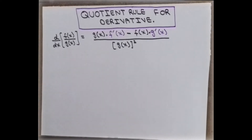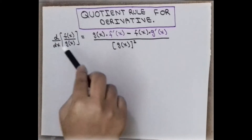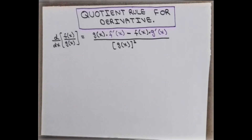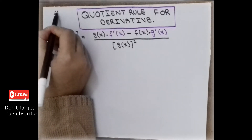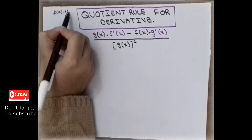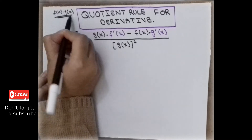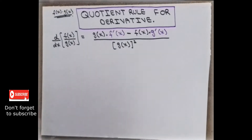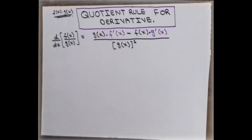Today's topic is the quotient rule for derivatives — how we can apply a derivative when we have a function in f over g form. In the previous video we learned how to apply a derivative using the product rule, where we have a function as f of x times g of x. Now this is a quotient form.